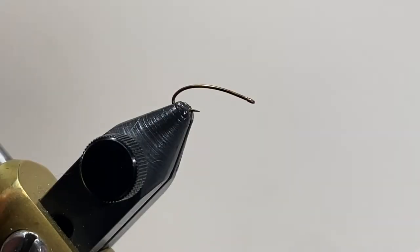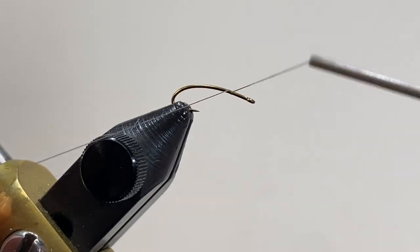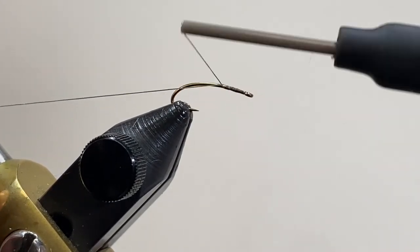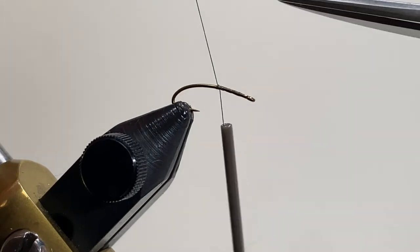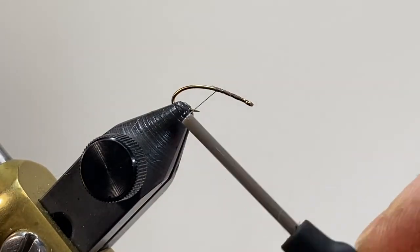Today we're tying a suspended midge. We'll begin by wrapping the thread around the shank of the hook from the eye, trimming off excess about halfway down.